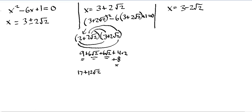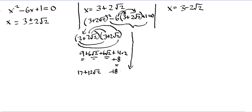We're not done because we have the second half of the left side of the equation still to work with. We have minus six times, in parentheses, three plus two times the square root of two. So we multiply minus six times three, and minus six times two times the square root of two. Negative six times three is negative eighteen. And negative six times two times the square root of two is minus twelve times the square root of two. And we have one more term: plus one equals zero.